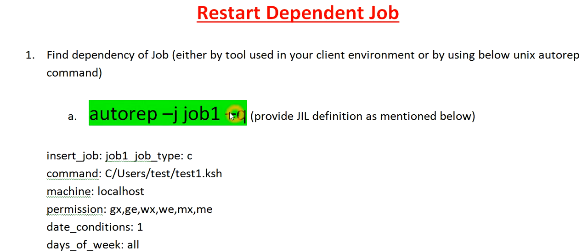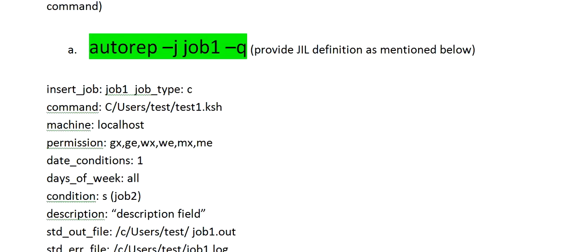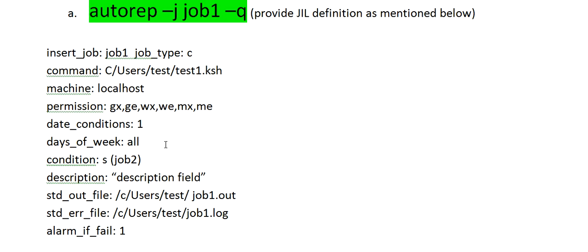I used the autorep command to get the definition for job one. As you can see, this line shows that job one will trigger when job two is successfully completed. In a real-time scenario, there may be a situation where job two is not completing, but as per the business requirement, we somehow have to forcefully trigger job one, since job one is completely dependent on job two.